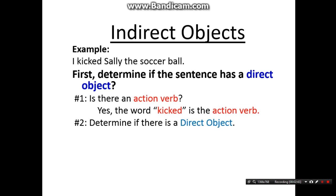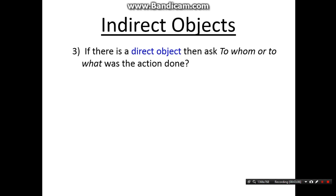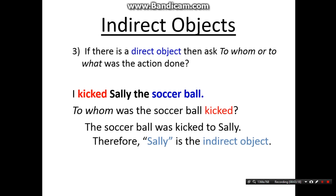Write down number two: determine if there is a direct object. Who or what was kicked? The soccer ball was kicked, so soccer ball is the direct object. Step three — write this down: if there is a direct object, ask to whom or to what was the action done. I kicked Sally the soccer ball — to whom was the soccer ball kicked? The soccer ball was kicked to Sally, therefore Sally is the indirect object. On the bottom half of your notes you should have three steps: find the verb (must be action), determine if there's a direct object, and ask to whom or what the action was done.